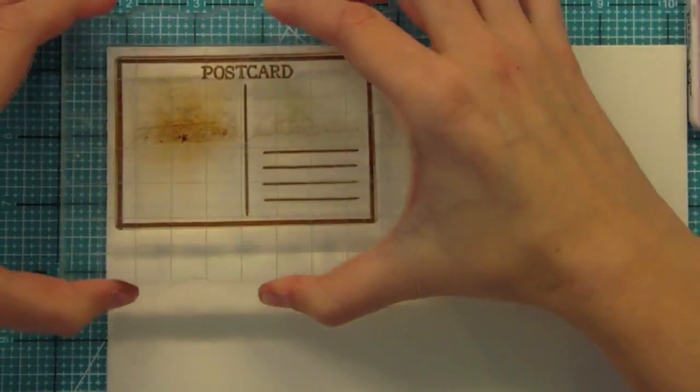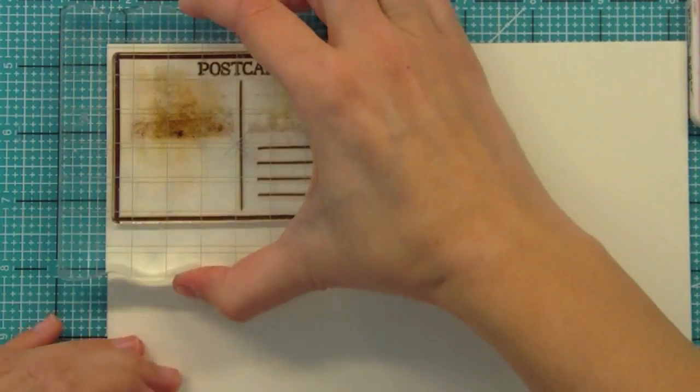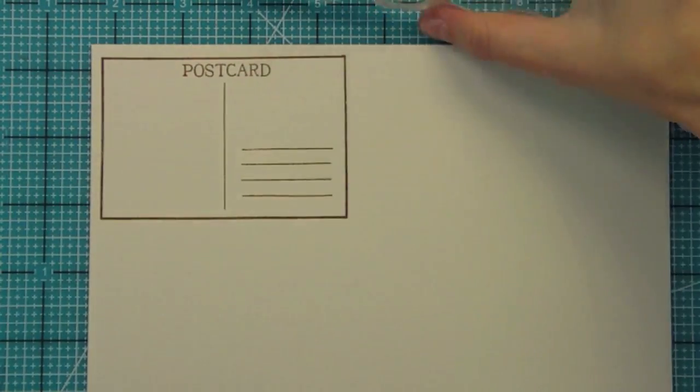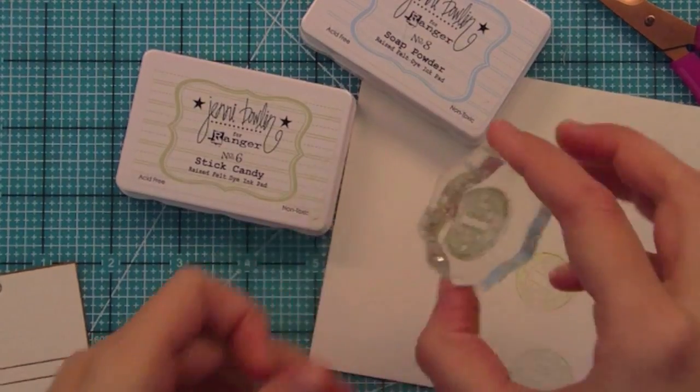This is the You've Got Mail set and I'm going to go ahead and stamp out the postcard from this set in some brown ink. I love this postcard. It's awesome for things like mini albums and scrap pages because it's great for journaling but it also looks really cute on cards. So I'm using it today and I think it's going to be really fun.